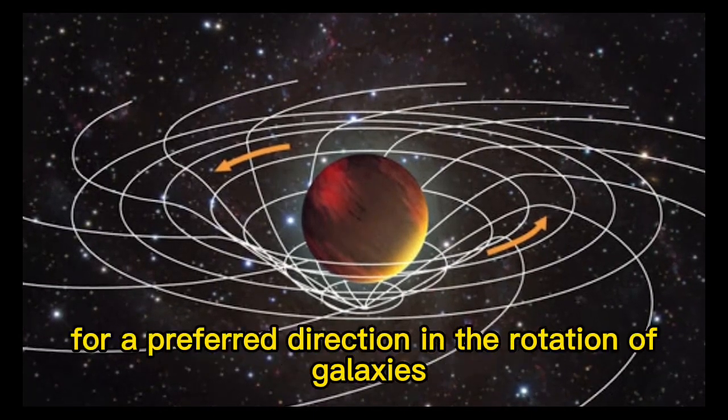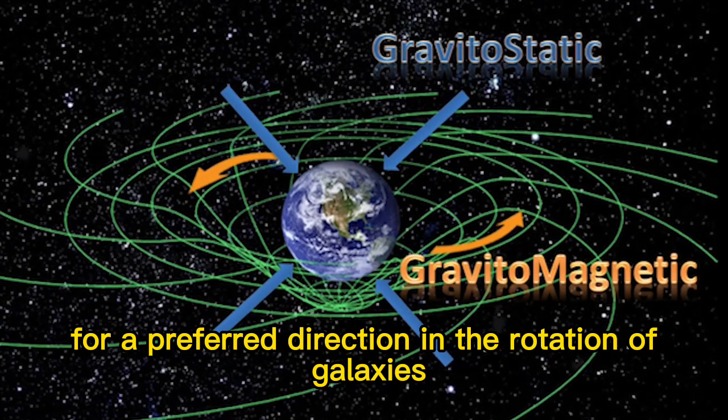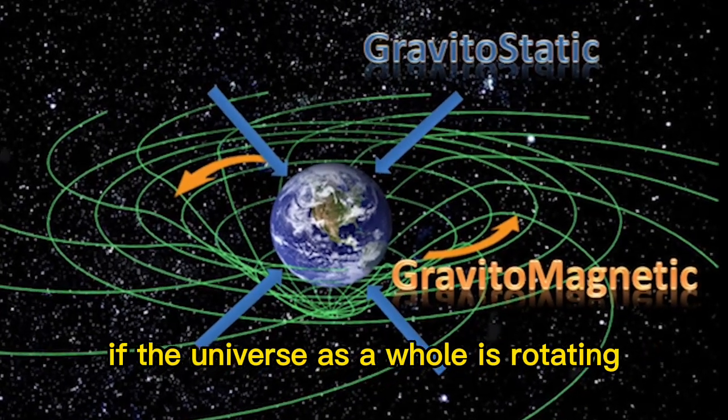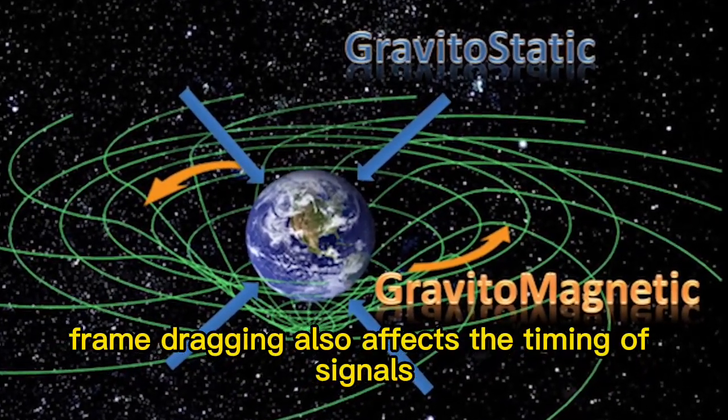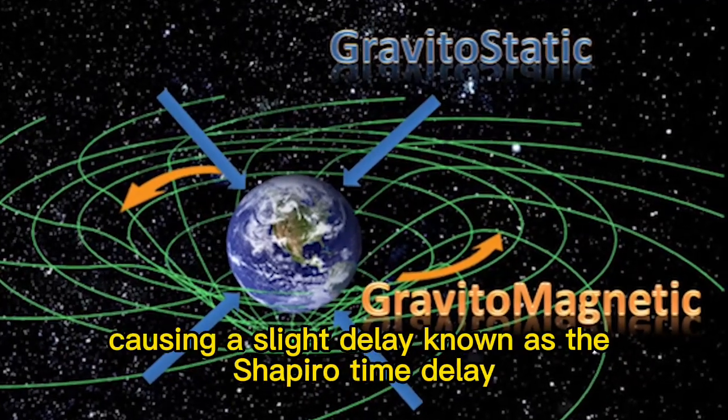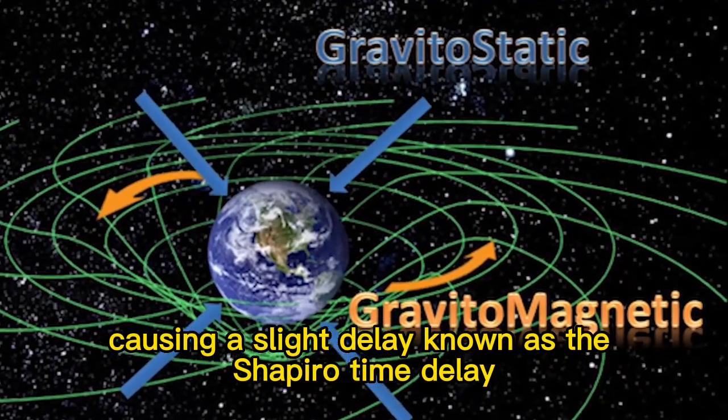It could even be responsible for a preferred direction in the rotation of galaxies if the universe as a whole is rotating. Frame dragging also affects the timing of signals sent by satellites, causing a slight delay known as the Shapiro time delay.